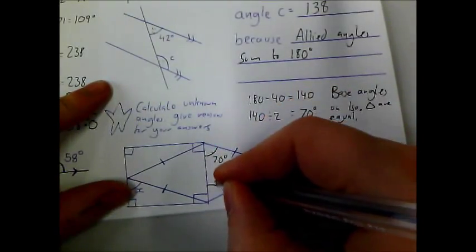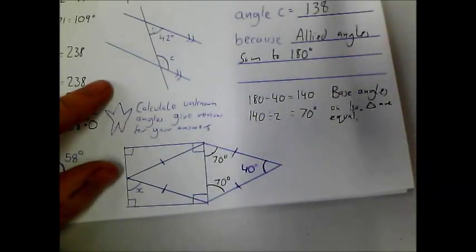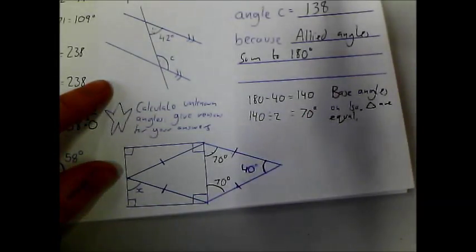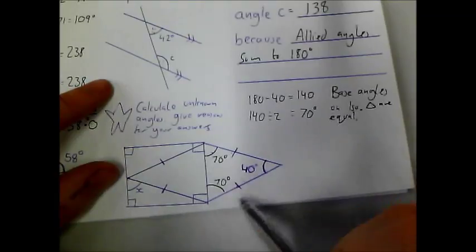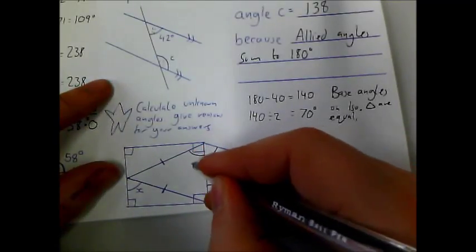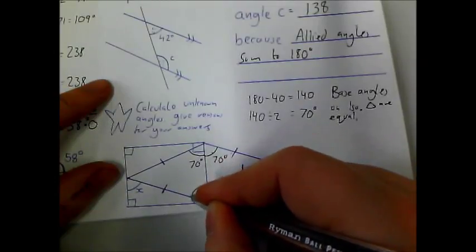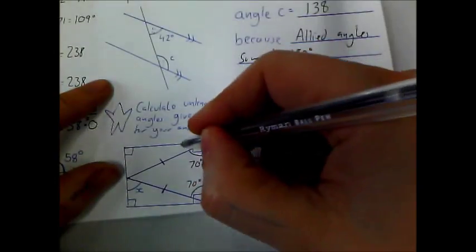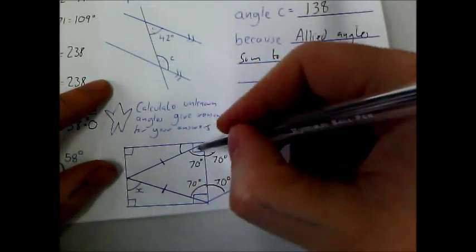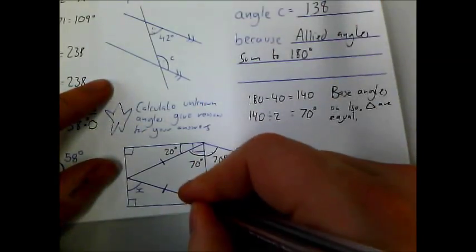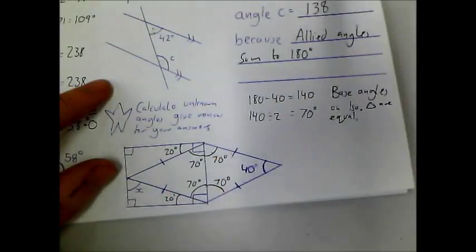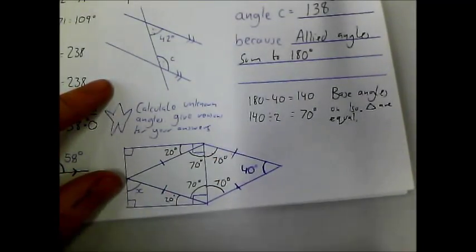So there's 70 degrees. These lines are also the same, so this bit here is also going to be 70 degrees and 70 degrees. So this angle here has to add up to 90, meaning that's 20 degrees. So this angle here is also 20 degrees. Now I can work out angle X.